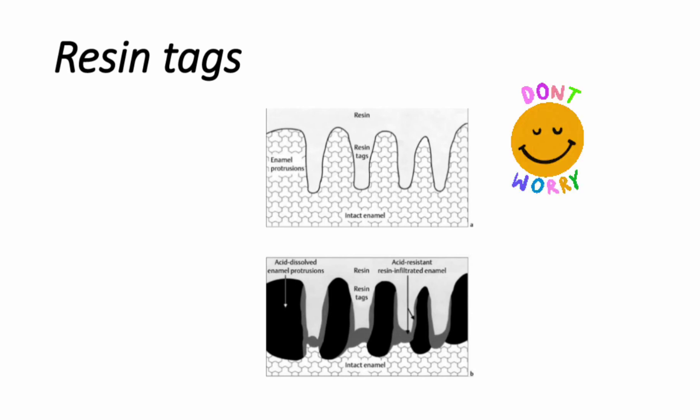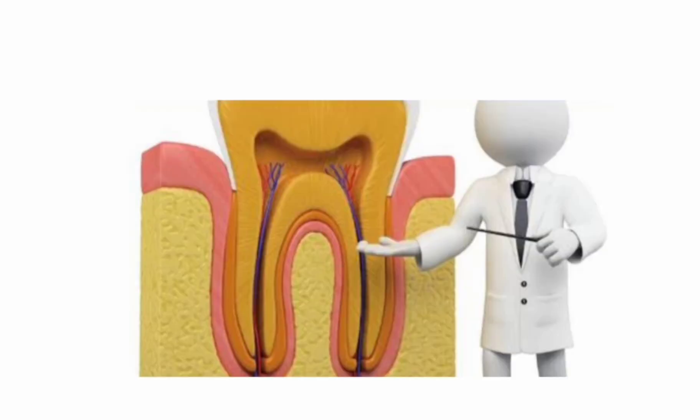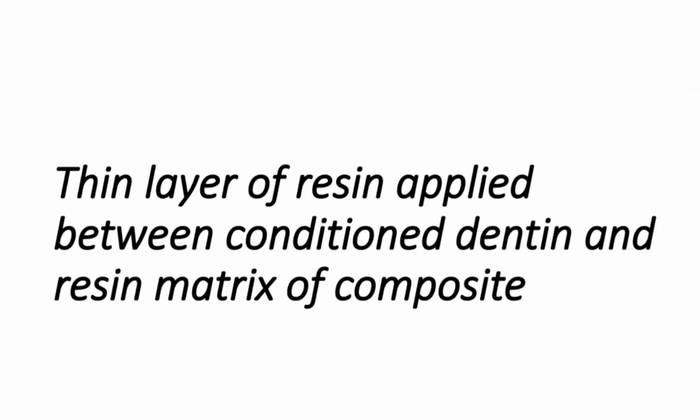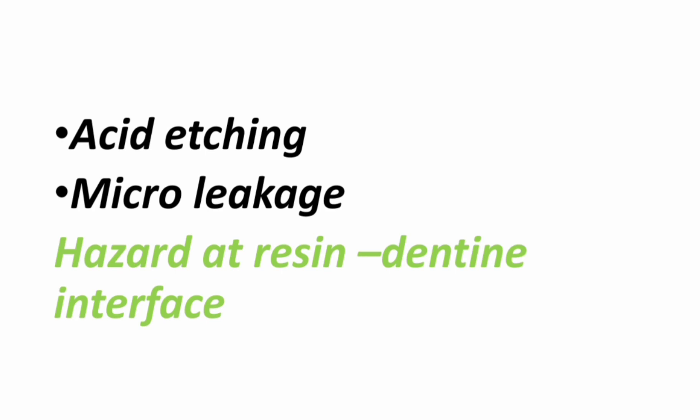What is dentine bonding agent? It is defined as a thin layer of resin applied between conditioned dentine and the resin matrix of a composite. Due to acid etching and micro-leakage, the loss of retention is not a hazard at the resin-enamel interface, but it is encountered at the resin-dentine interface. Here comes the importance of these agents. Due to differences in the composition of enamel and dentine, developing agents that adhere to dentine was challenging.